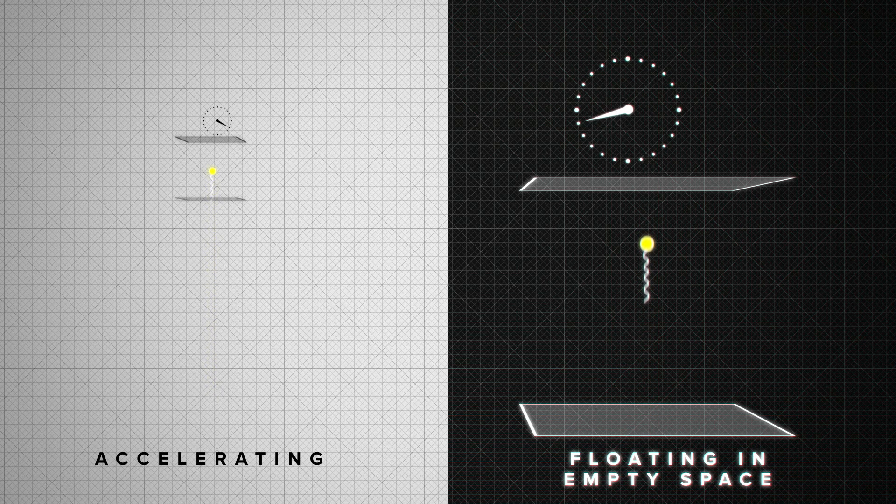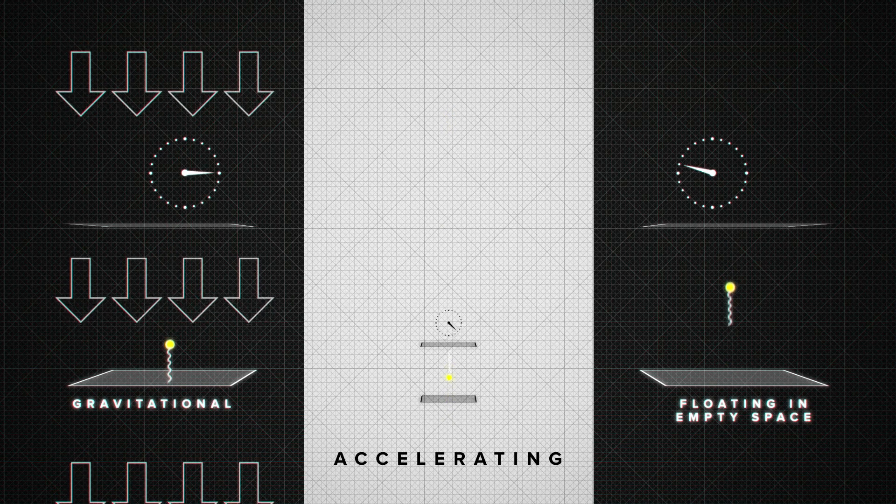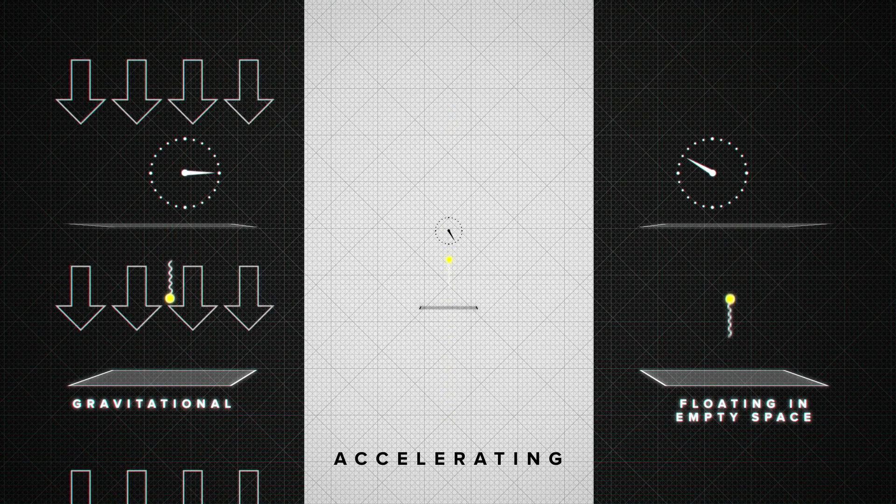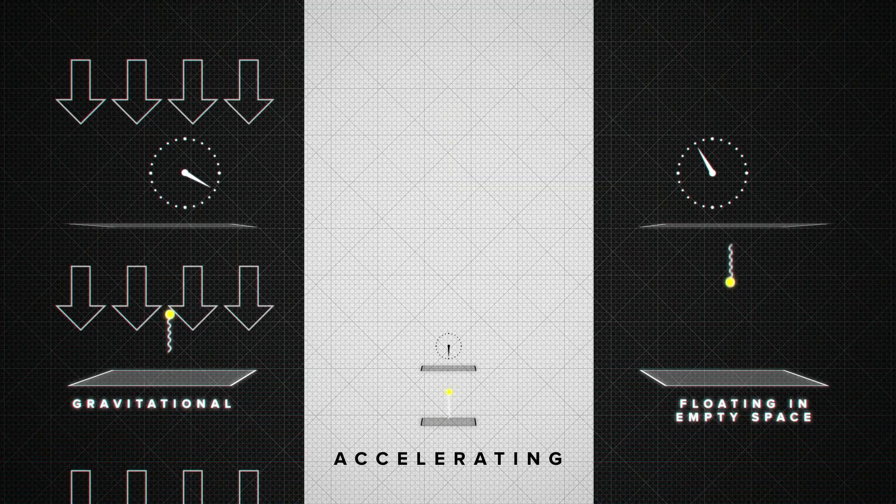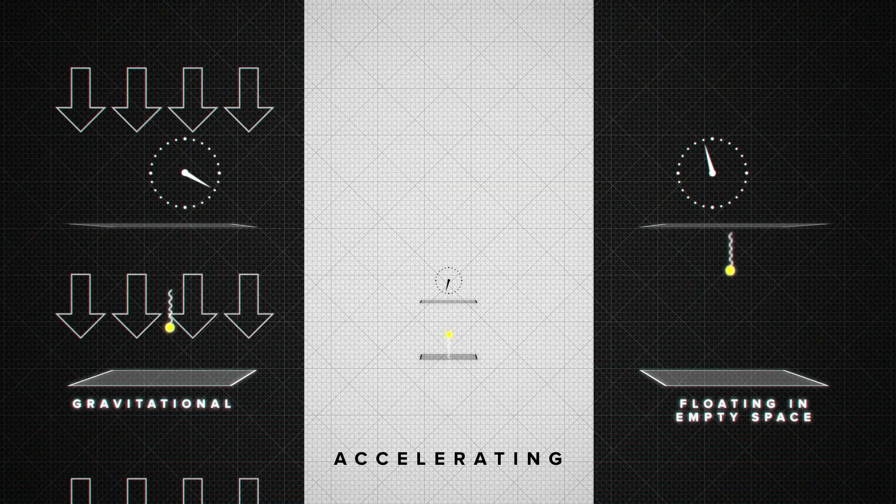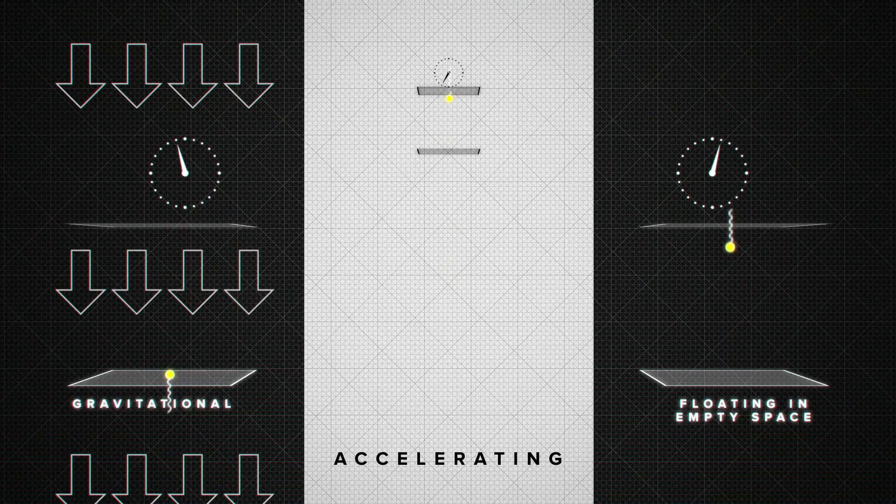Ticks take longer. But Einstein's equivalence principle tells us that a frame suspended in a gravitational field is indistinguishable from an accelerating frame. And so clocks must also tick slower the deeper they are in that gravitational field. This is the gravitational time dilation of general relativity.